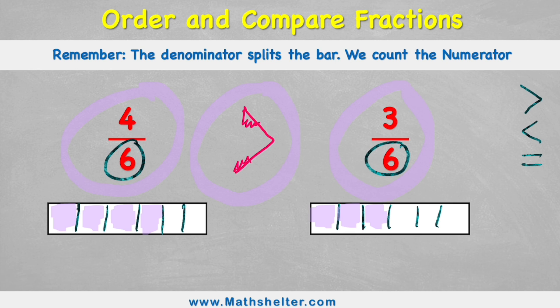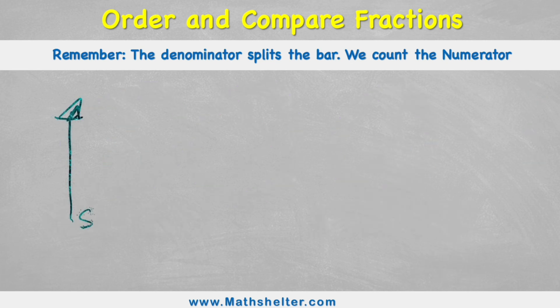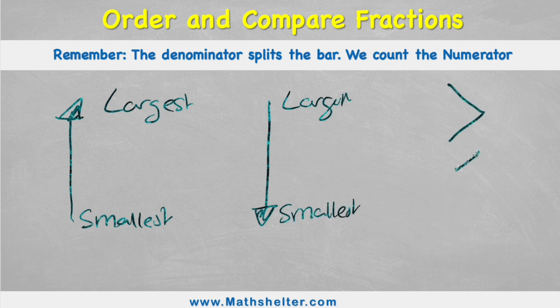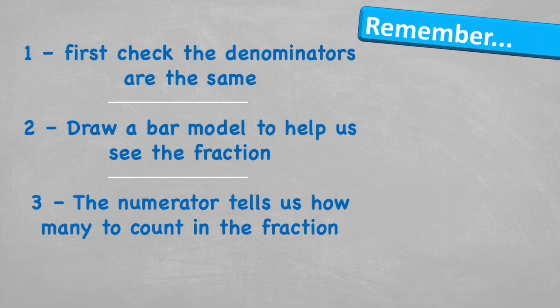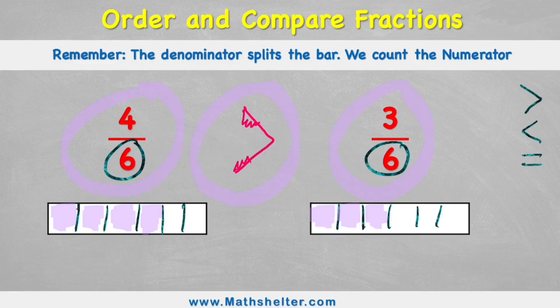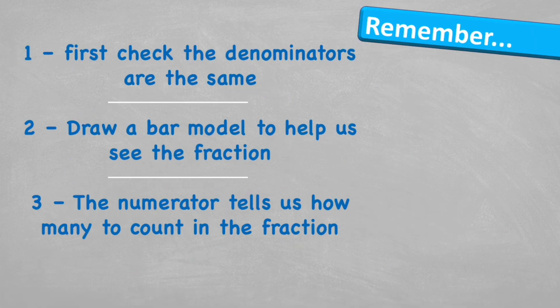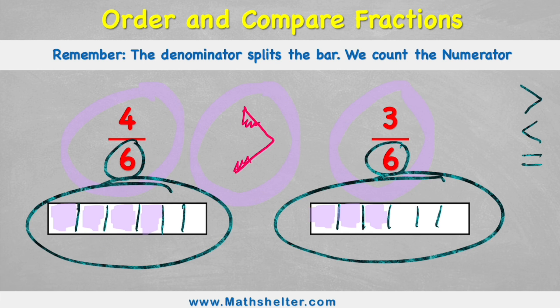And that's how to order and compare fractions. If we're ordering, we can use ascending, which means going from smallest to largest, or we could use descending, which is from largest to smallest. And when we're comparing, we could use the greater than, the less than, or the equal to symbol. Let's look at what to remember. First, check the denominators are all the same, because when we're comparing, we want our denominators to be the same. Then draw a bar model to help us see the fraction — just like we did here to see which one's greater. The numerator tells us how many to count in the fraction. Our four told us to color one, two, three, four; and our three told us to color only one, two, three. Once we've done that, we can clearly see which one is bigger or smaller.